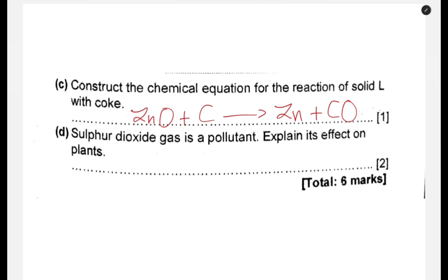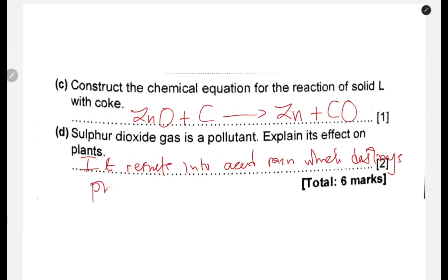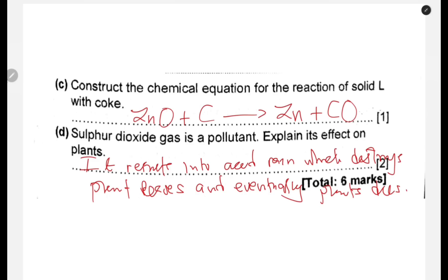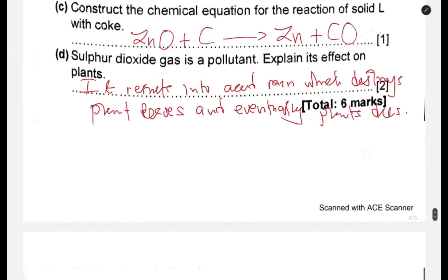Sulfur dioxide gas is a pollutant. Explain its effects on plants. Since it results in acid rain, that can destroy plant leaves and eventually the plant dies. You know that plant leaves are like the heart of the plant — that is what they use to manufacture food. So if food is not manufactured, then they eventually die. So it results in acid rain which destroys plant leaves and eventually plants die.